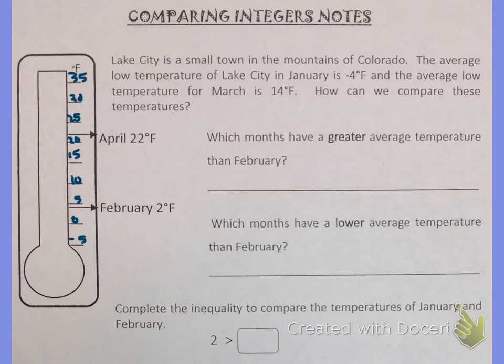January is negative 4 degrees Fahrenheit so it's going to be down here. I'll put J for January. And then we have March which is 14 degrees Fahrenheit. That's going to be right about there. I'll put M for March.